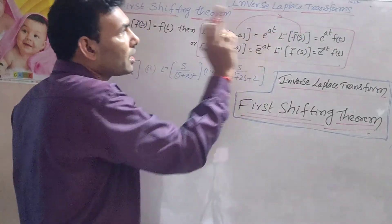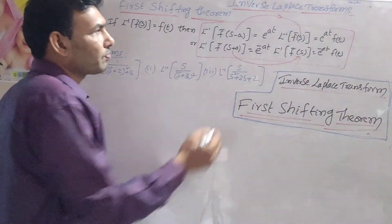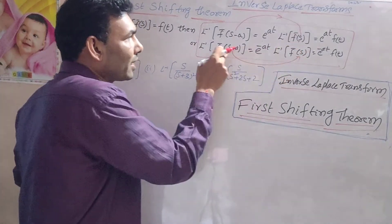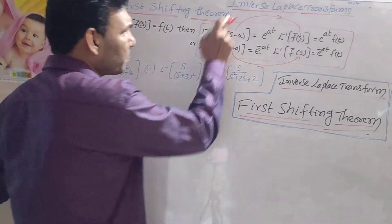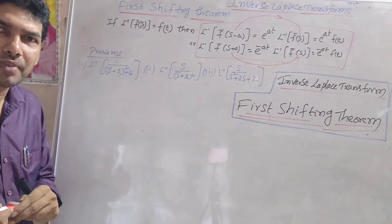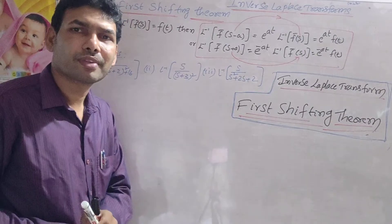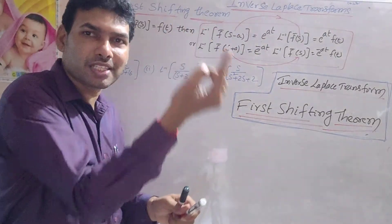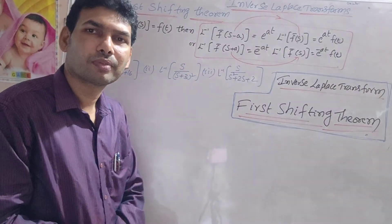So (s minus a) in place of s gives e^(at) as a product — same in Inverse Laplace. Then write e^(at) in product. So we are going to apply the First Shifting Theorem of Inverse Laplace Transform: replace (s plus a) with s and write e^(minus at) in product. We are going to write in the place of s. The reason is, if you replace s minus a by s or s plus a by s, you will get the inverse Laplace formula.